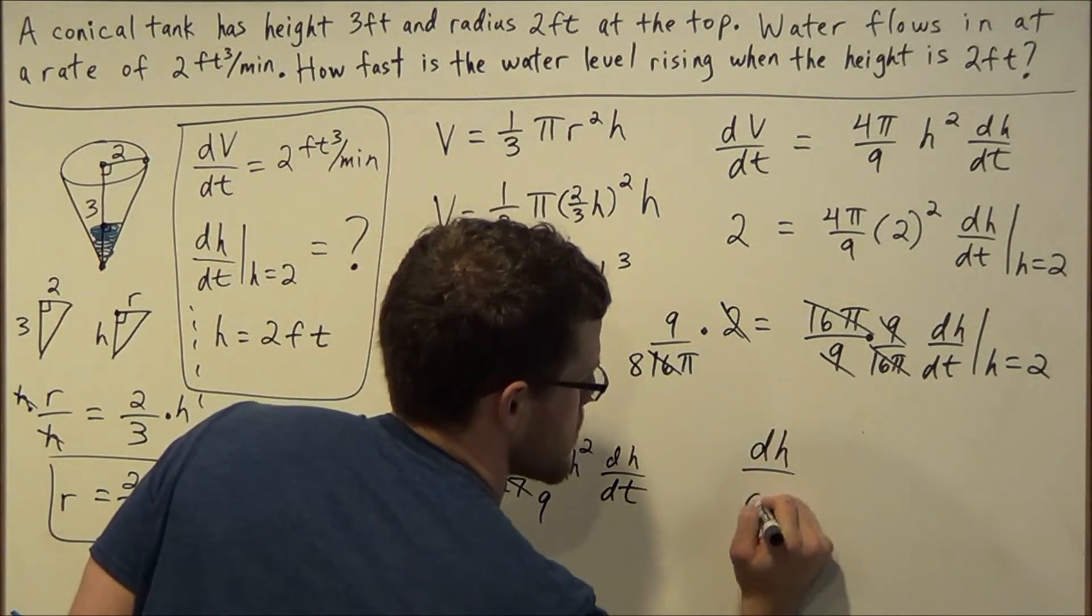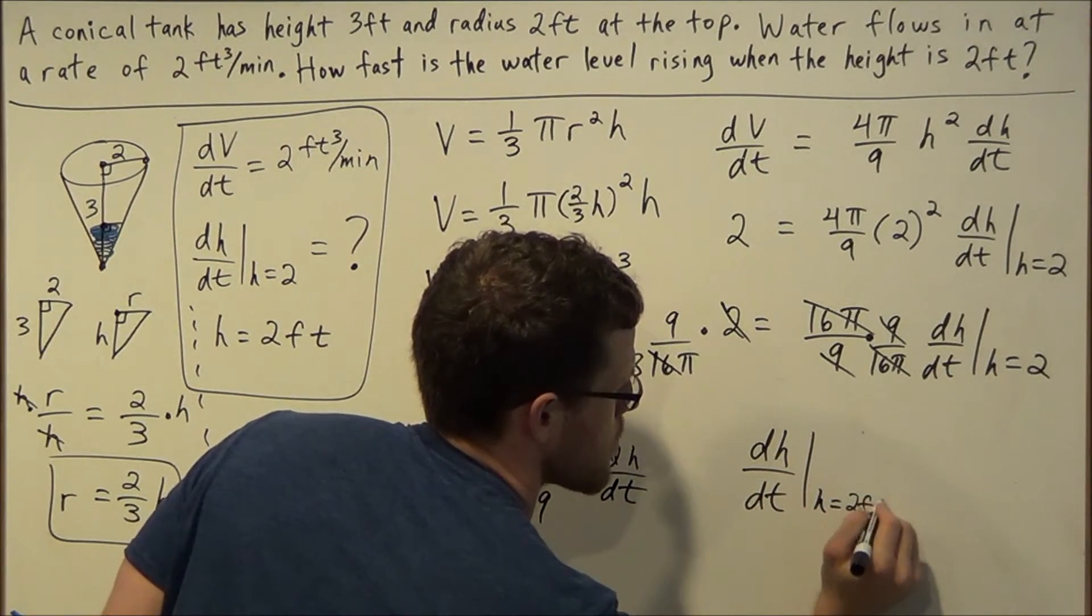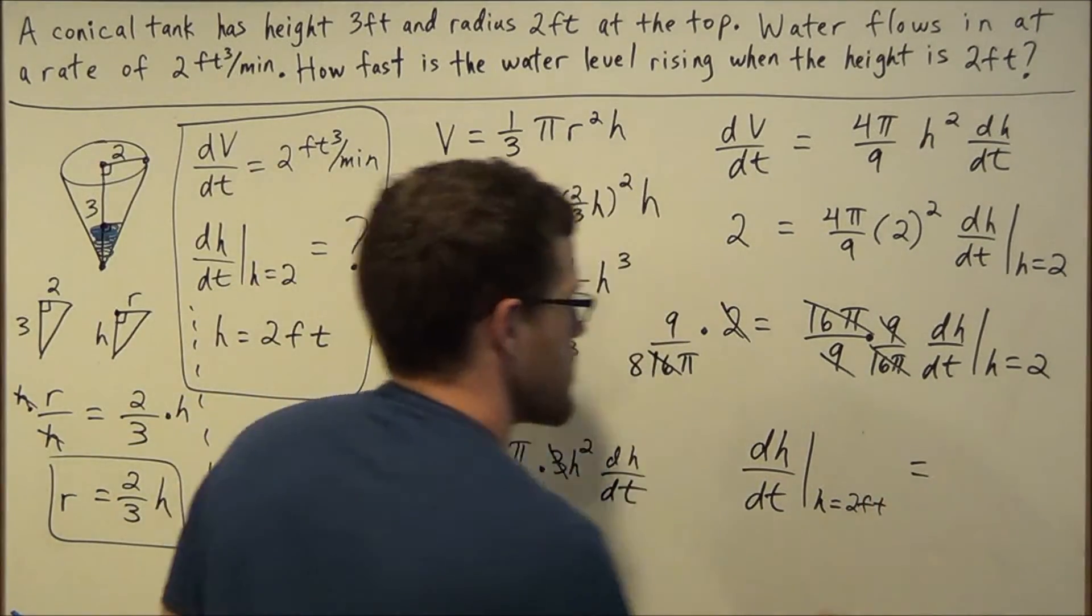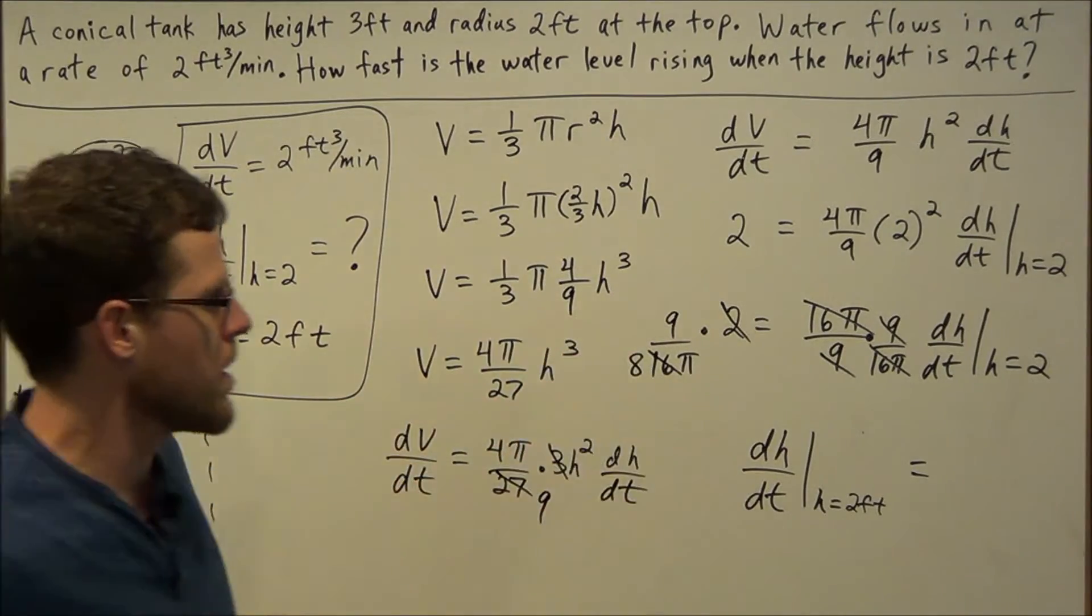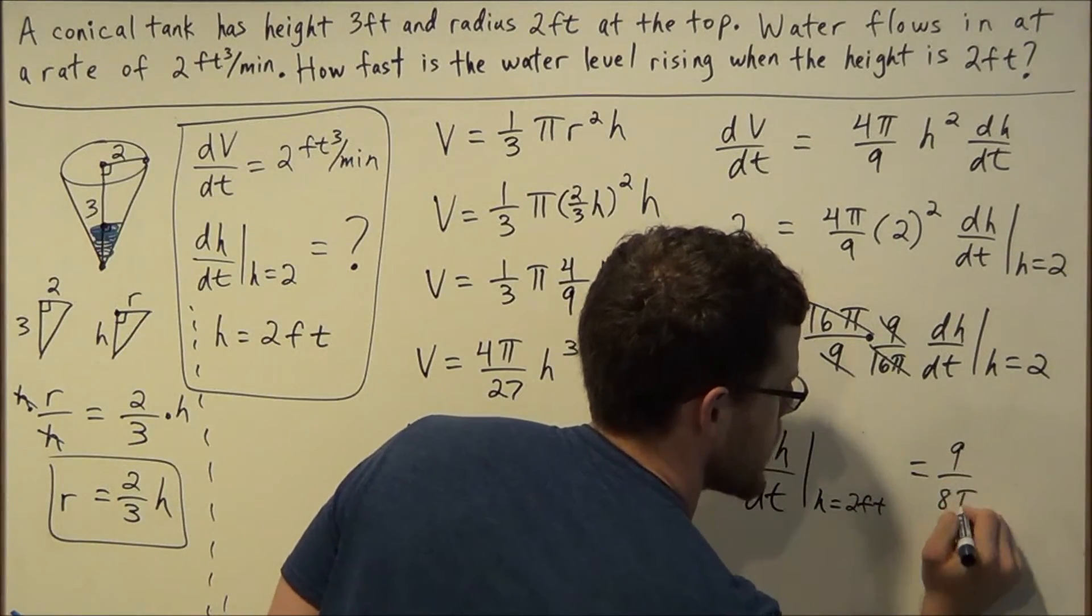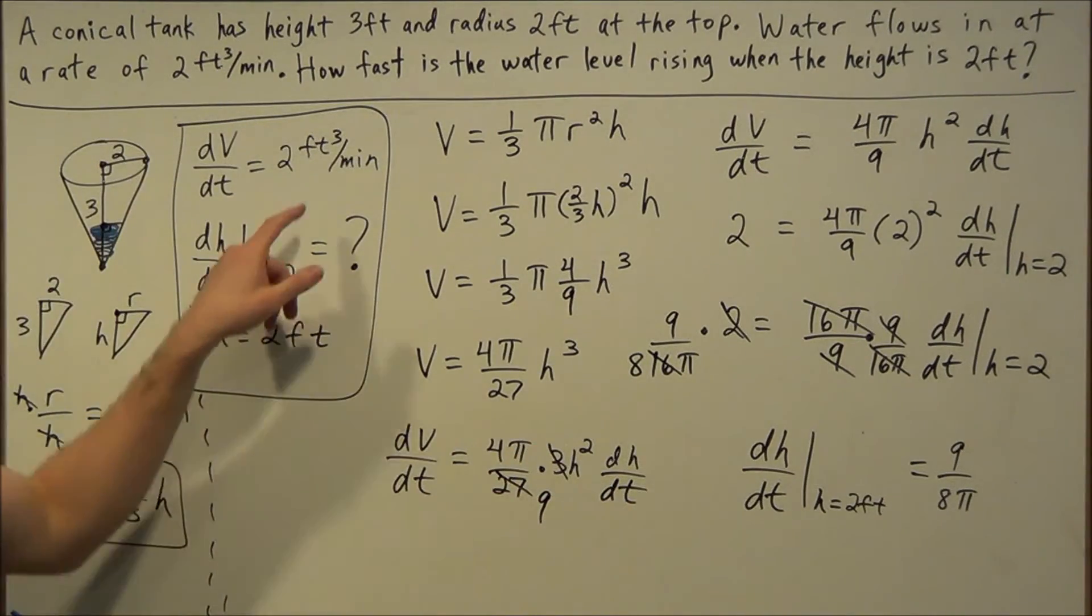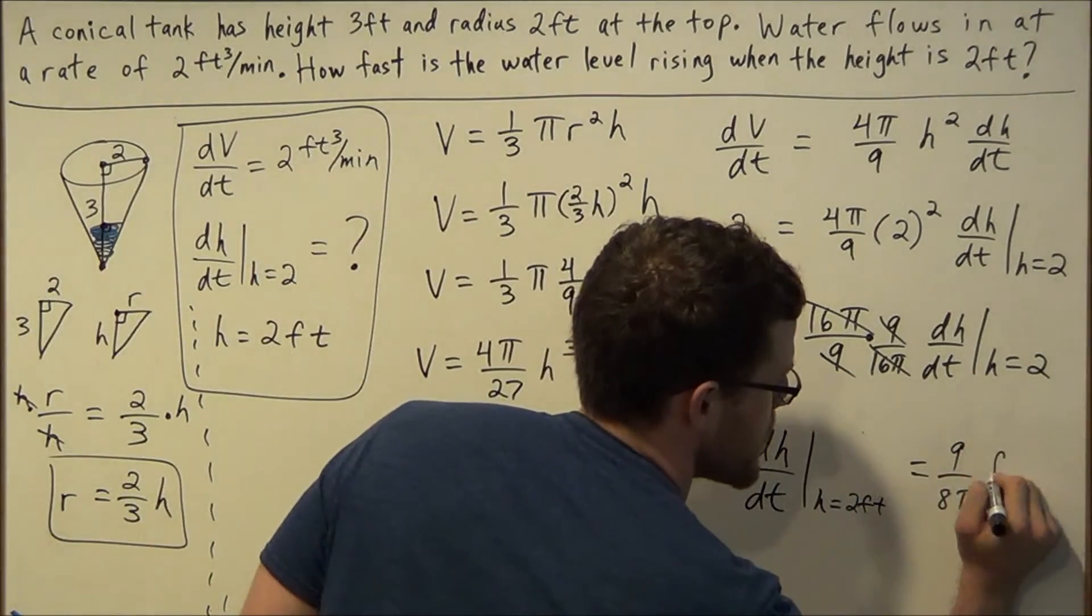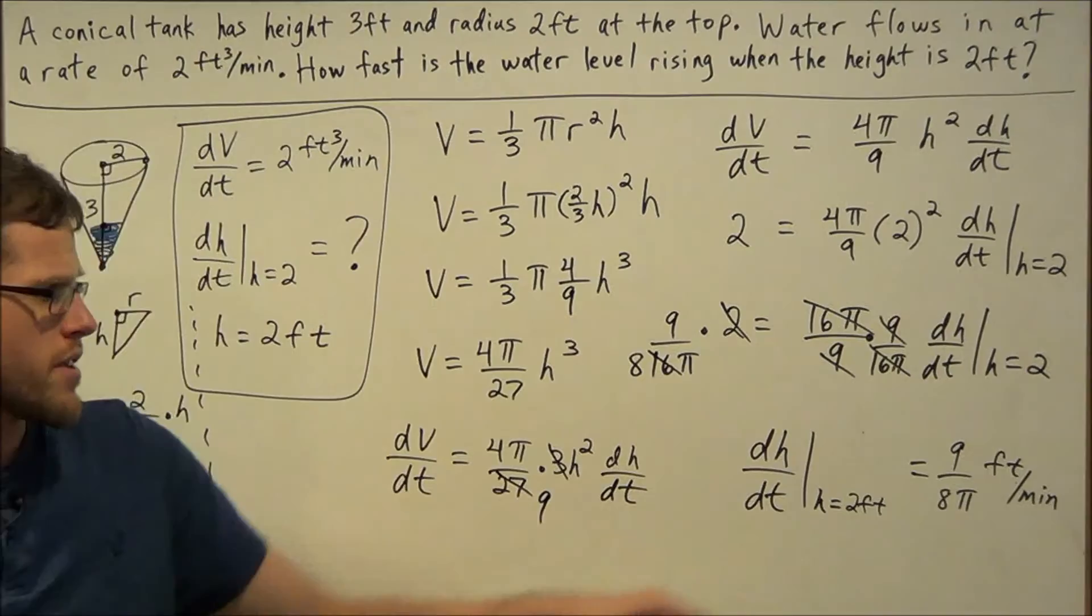This is going to tell us our unknown rate. We have dh/dt at h equals, and now we'll introduce the units, at h equals 2 feet, equals, and on the left-hand side all we're left with is 9/(8π). So we have 9/(8π). But just so this makes sense, the height is a one-dimensional concept, and since we were in terms of feet and minutes, we'll call this feet per minute. And this is our final answer.